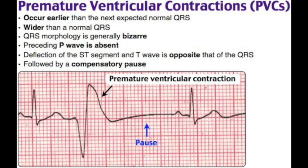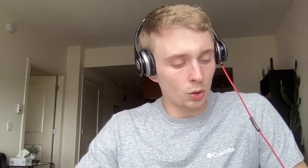Ventricular dysrhythmias — PVCs (premature ventricular complexes): can be unifocal or multifocal (more than one focus), bigeminy (every other beat is a PVC), or couplet (two PVCs in a row). A PVC is a premature beat from the ventricle — shows as wide, bizarre QRS occurring earlier than expected. The T wave is in the opposite direction of the QRS. Associated with a compensatory pause after; overall rhythm unchanged. No treatment usually needed.